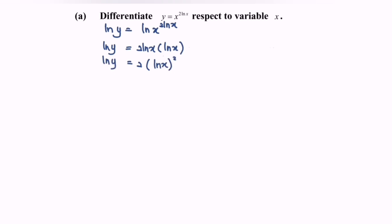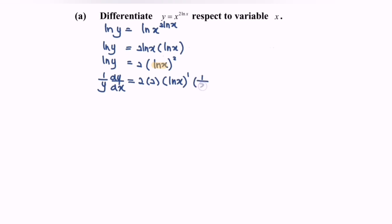Next, differentiate the situation with respect to x. We get 1 over y times dy/dx equals 2 times the derivative of (ln x)². Focusing on that term, we apply the chain rule: 2 times (ln x)^1 times the derivative of the internal function, which gives 1 over x. Differentiating x gives 1.